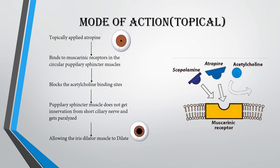Now we will discuss the mode of action of Atropine when applied topically. When Atropine is applied topically, it binds to the muscarinic receptors in the circular pupillary sphincter muscles — the muscles which constrict the pupil. It blocks the acetylcholine binding sites, so the pupillary sphincter muscle does not receive innervation from the short ciliary nerve and gets paralyzed.